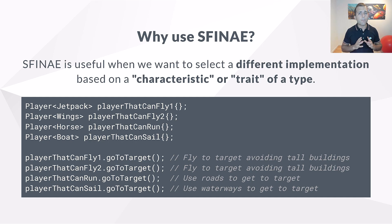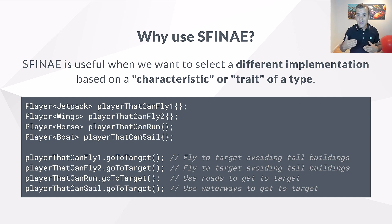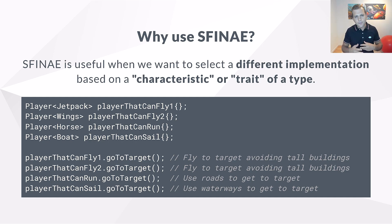Imagine a player template class that gets an add-on type as a template parameter — a jetpack add-on, a wings add-on, a horse, a boat, and so on. With SFINAE, we can select a different implementation for the go-to player member function when a player has an add-on that provides flying capabilities. It's not about the jetpack or the wings specifically — it's about the fact that an add-on provides the ability to fly. The idea is that depending on the add-on's characteristics, the go-to target member function of player does something different, and since we're talking about templates, this is decided during compilation.